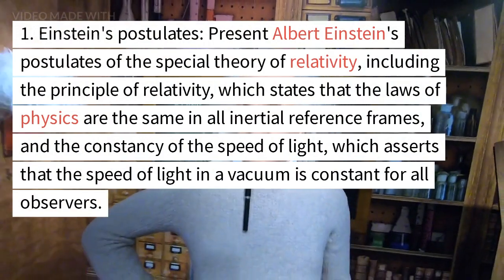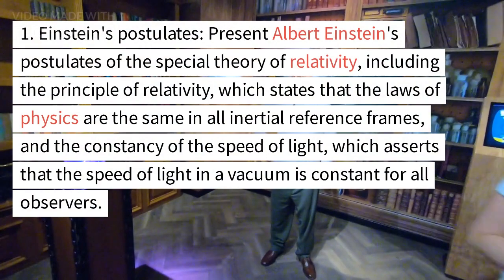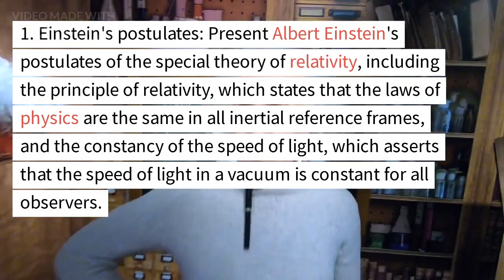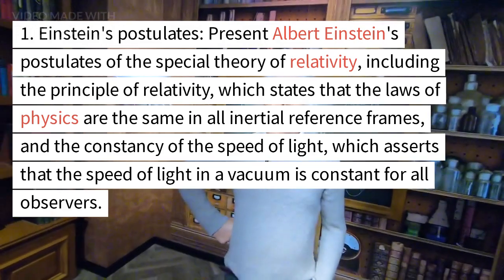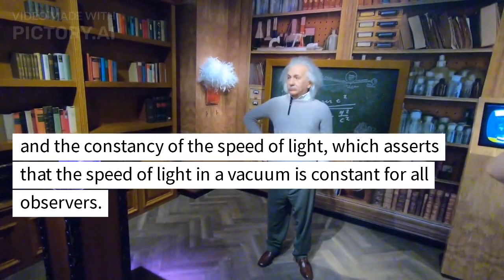Einstein's Postulates. Present Albert Einstein's postulates of the special theory of relativity, including the principle of relativity, which states that the laws of physics are the same in all inertial reference frames, and the constancy of the speed of light, which asserts that the speed of light in a vacuum is constant for all observers.